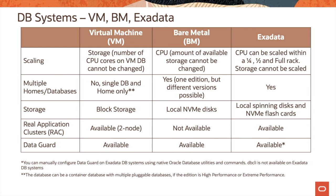This slide shows you the comparison between the three different offerings — Virtual Machine, Bare Metal, and Exadata — on Oracle Cloud Infrastructure, covering various capabilities such as scaling storage and cores, the ability to have multiple database homes and databases in the service, as well as high availability and disaster recovery features.